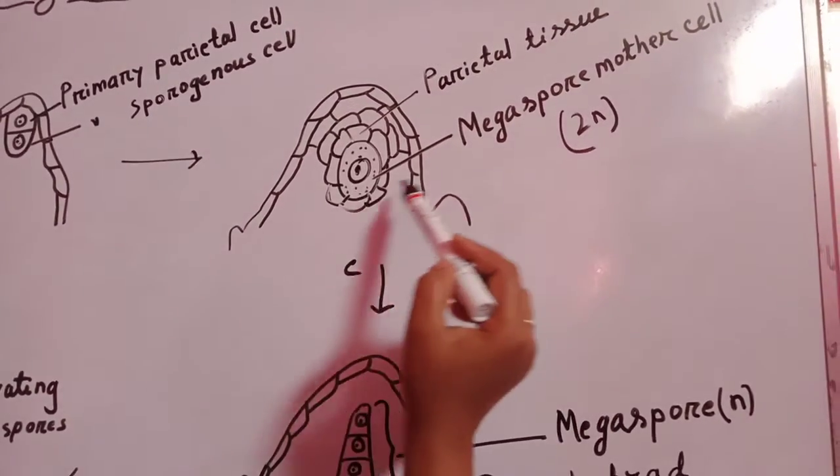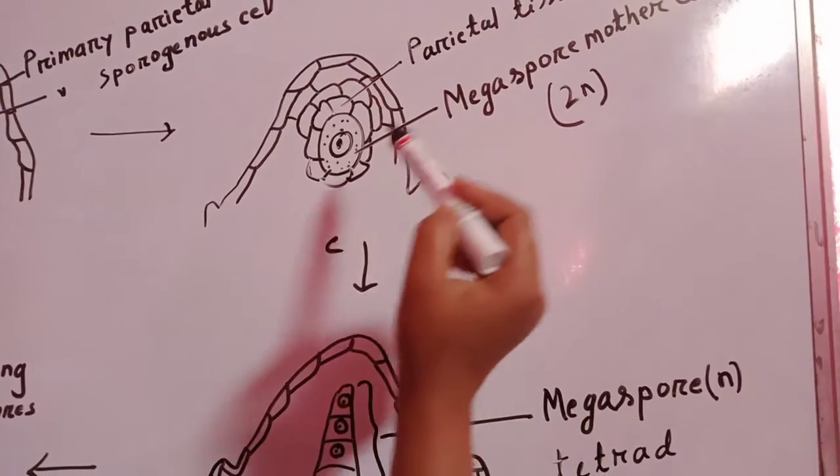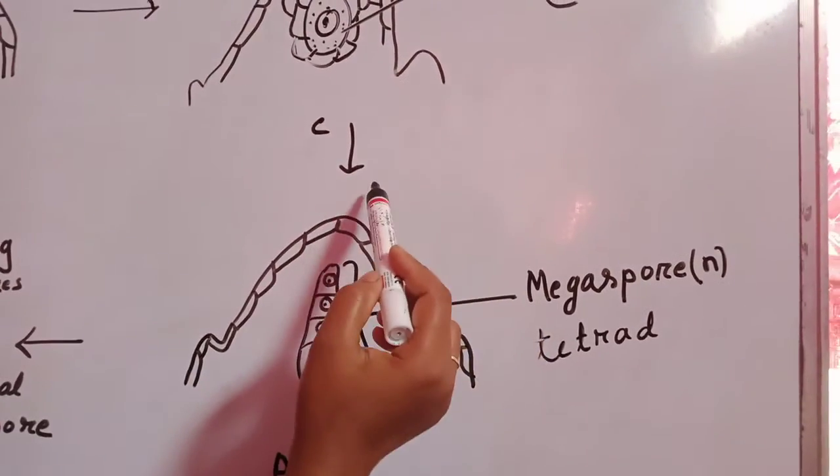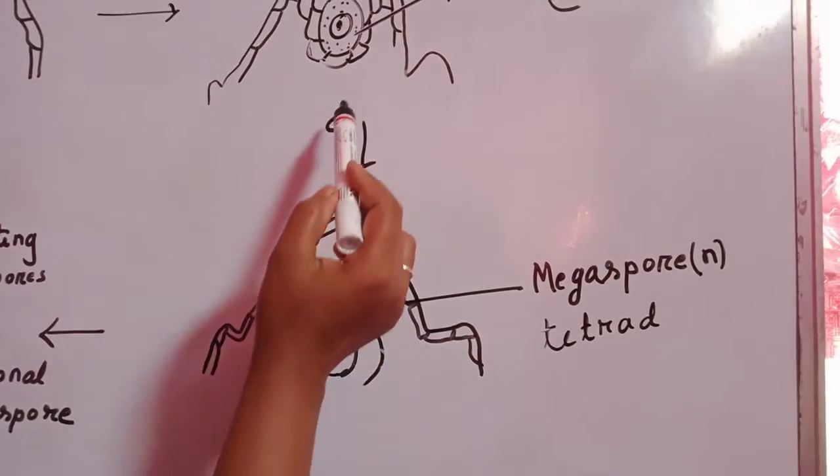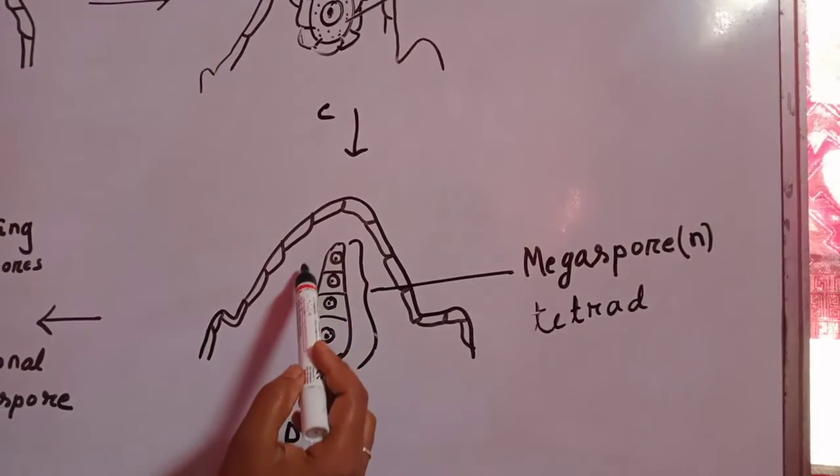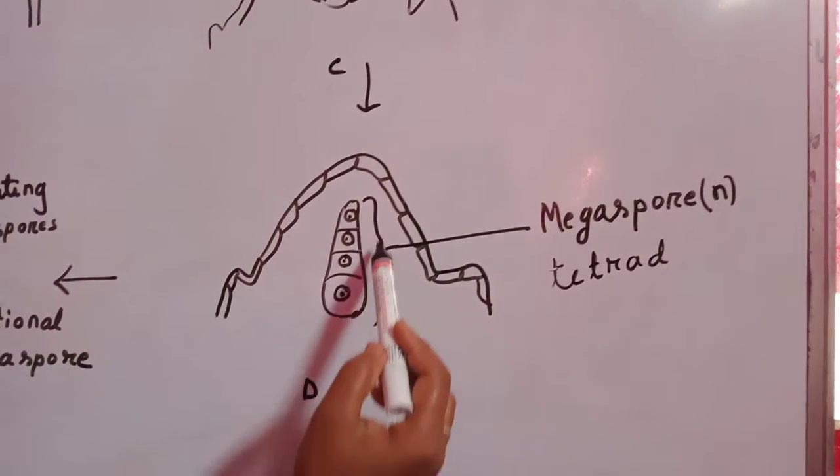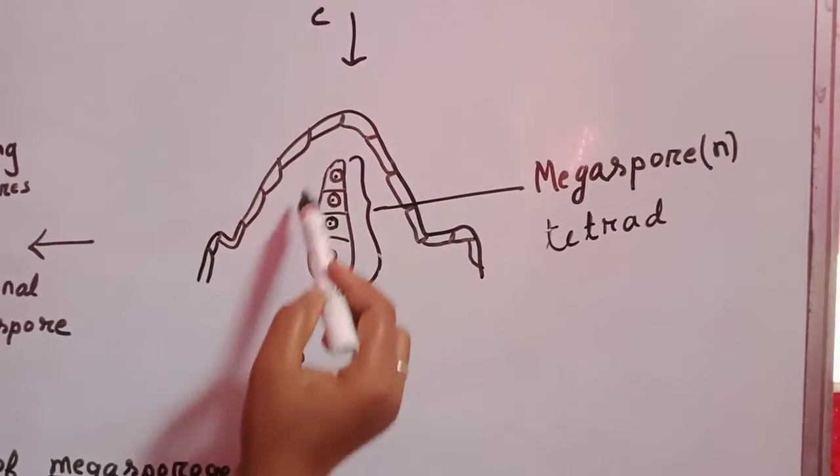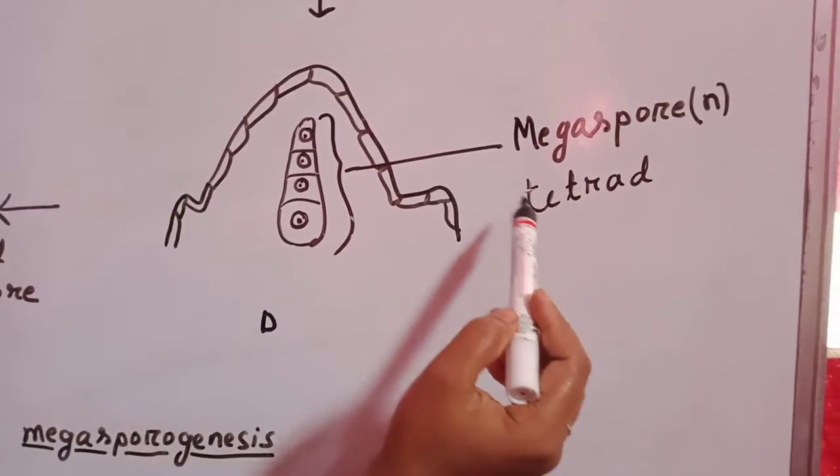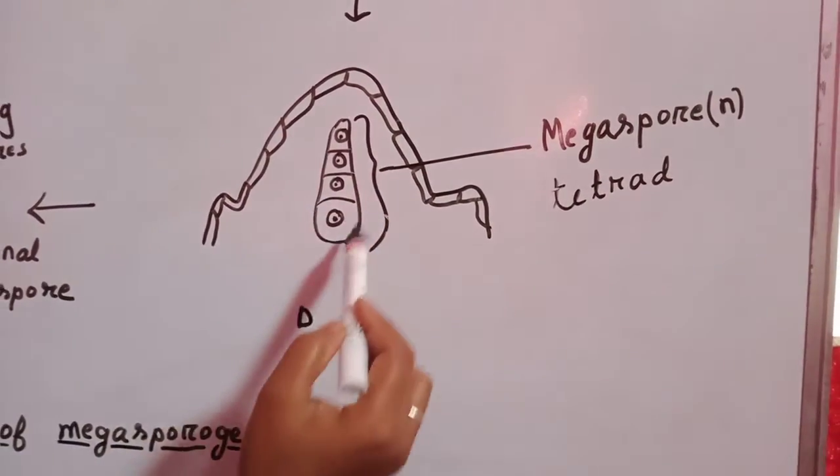The megaspore mother cell undergoes meiotic division, that is, reductional division, and gives rise to four megaspores, forming a megaspore tetrad.